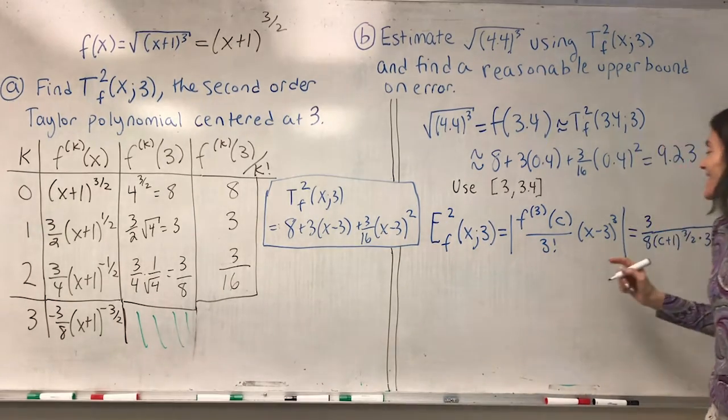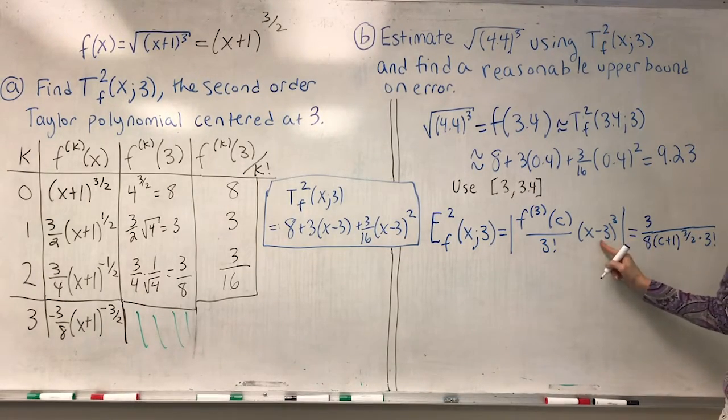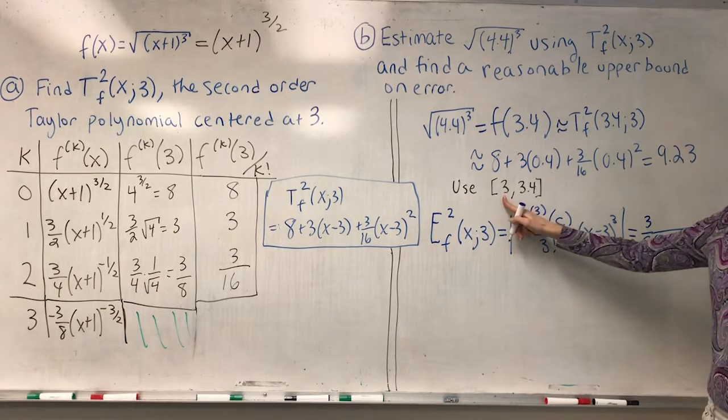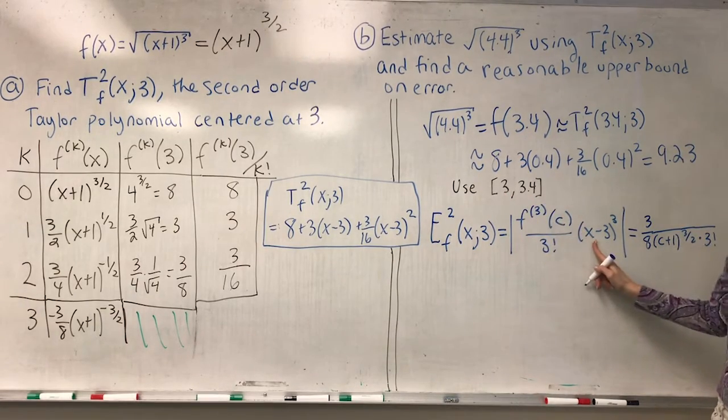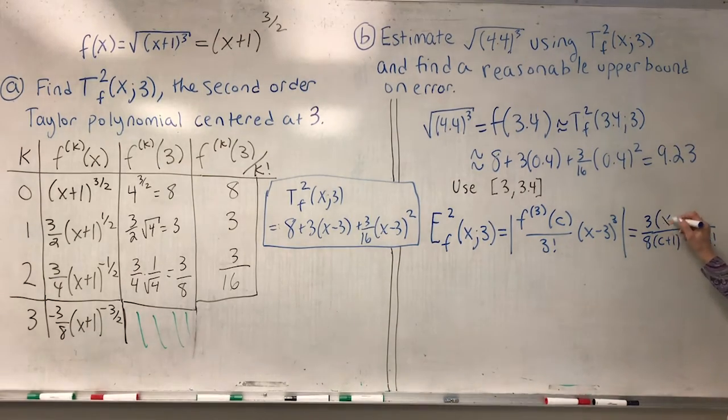Now, in my numerator, what do I have? It would be absolute value (x minus 3) cubed, except between 3 and 3.4, absolute value (x minus 3) is not negative. So I can write (x minus 3) cubed.